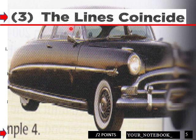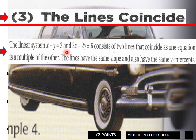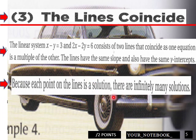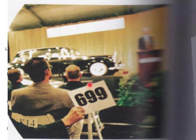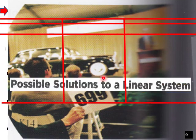So, the lines coincide, x minus y equals 3, 2x minus 2y equals 6, consists of two lines that coincide as one equation is the multiple of each other. And they also have the same y-intercept. Because they're the same line, basically, they're infinite.